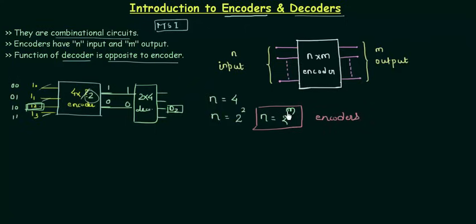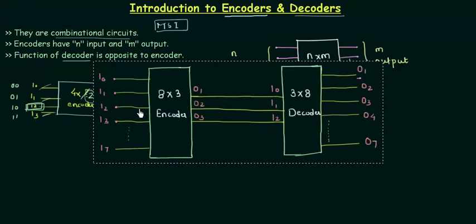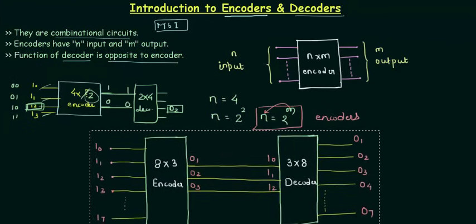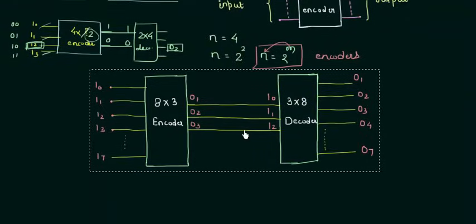And in case of decoders the relation will just change. The N will become M and M will become N. So let's take an example in which I have made an 8 by 3 encoder and the decoder 3 by 8.